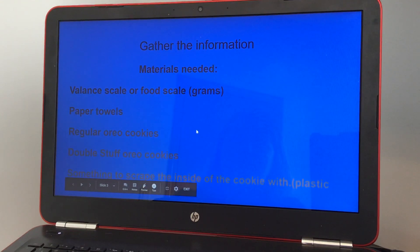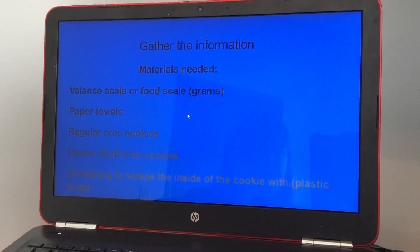Okay, so you're gathering information. The materials you're going to need is a balance scale or a food scale so that we can measure it in grams, paper towels, regular Oreo cookies, double stuffed Oreo cookies, and something to scrape the inside of the cookie with like a plastic knife would be preferable.